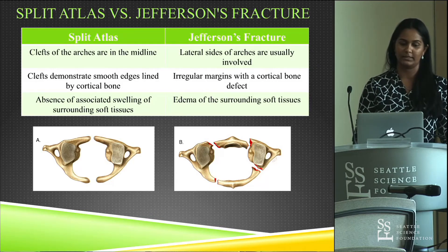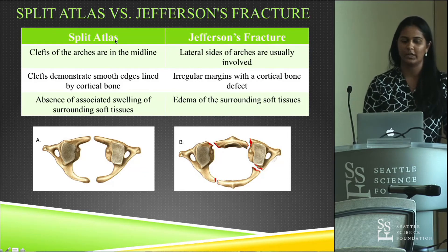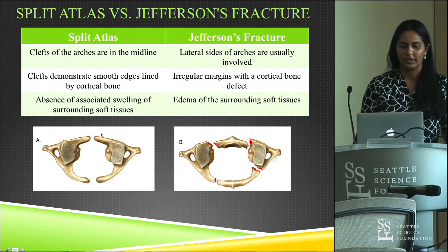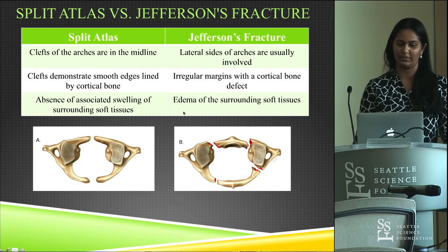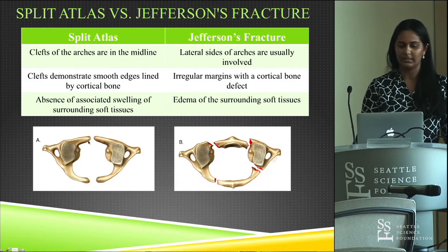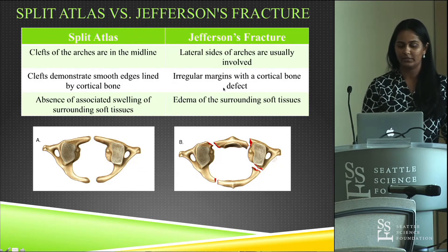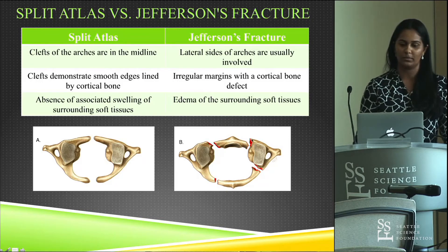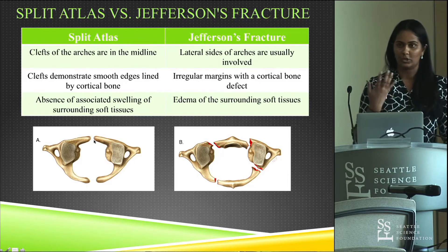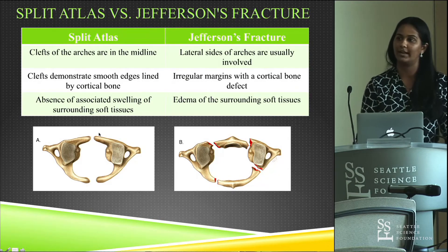To differentiate split atlas from Jefferson's fracture on imaging: the clefts in split atlas tend to be in the midline, whereas fractures occur on the lateral aspects of the arches. In split atlas, the clefts are smooth and rounded and lined by cortical bone, whereas in Jefferson's fracture they appear irregular and sharp with a cortical bone defect. Additionally, trauma-related fractures show edema and soft tissue swelling surrounding the fracture, which would not be present in split atlas.